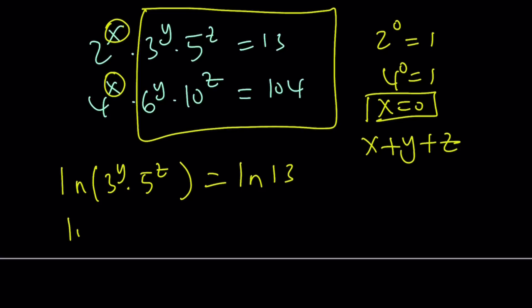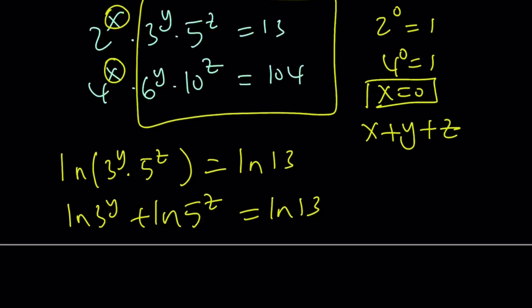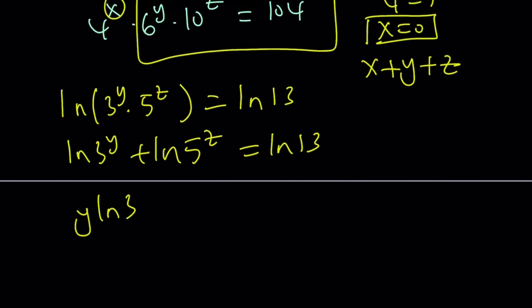And then from here, we get y ln 3 plus z ln 5 equals ln 13. And by the same token, if you do the same type of math, you're going to get y ln 6 plus z ln 10 equals ln 104.